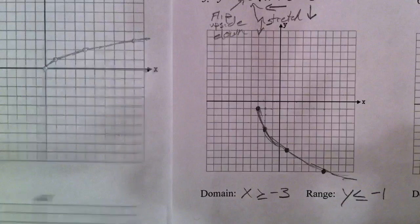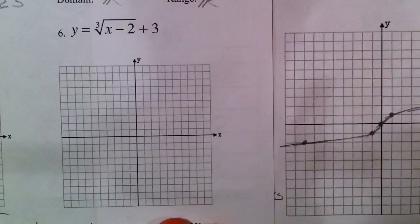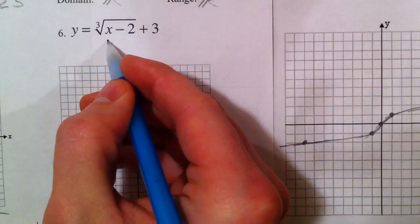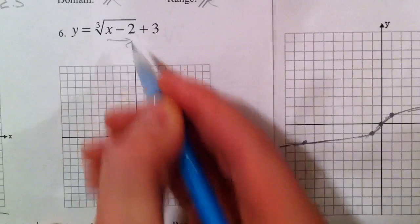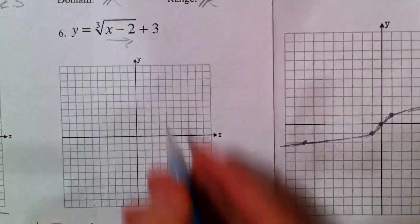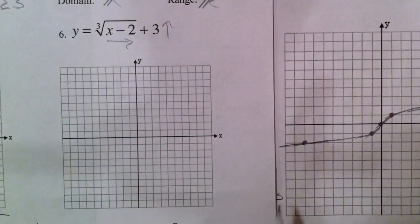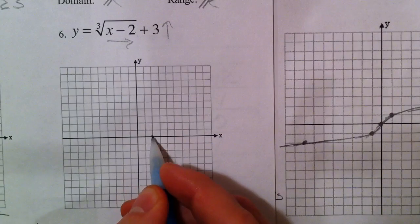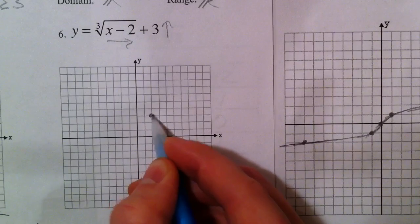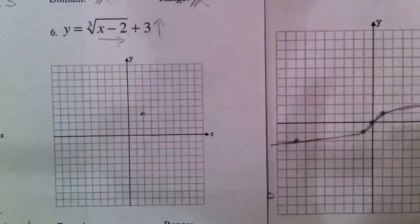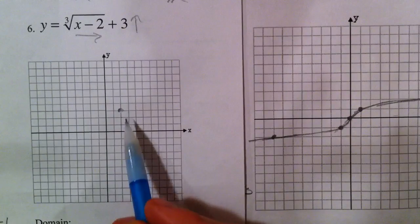Last one — a cube root graph. We've got minus two inside with x, so opposite of what we think: it's moving to the right. Plus three outside moves it up. So the center starting point moves to the right two and up three.